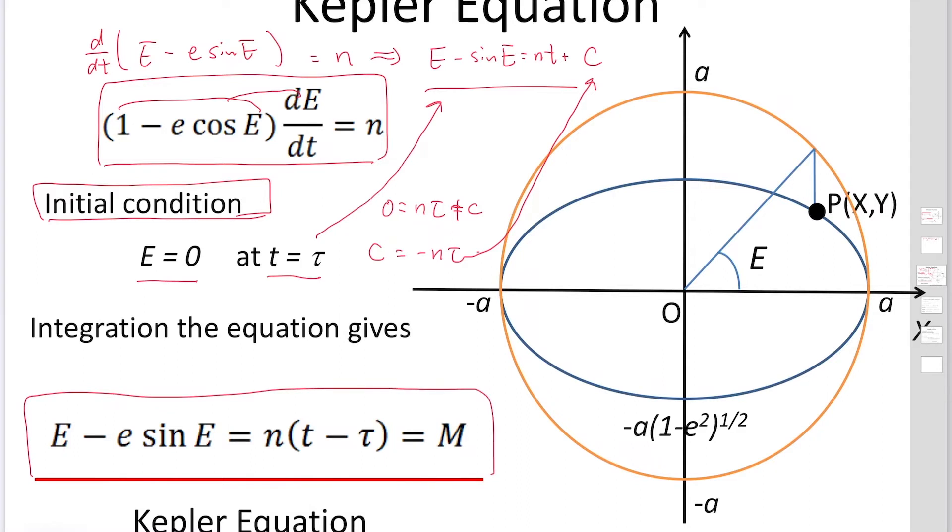By solving this equation, we could find the positions of a particle on the orbit. But nobody succeeded to find the explicit expression of E as a function of T, because E appears here and inside of the sine function. We are going to study the method for approximate solution of E.